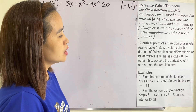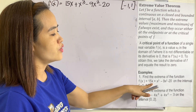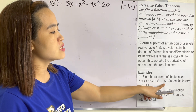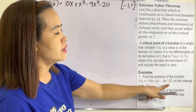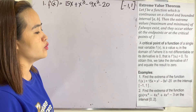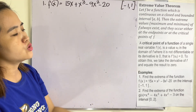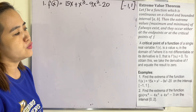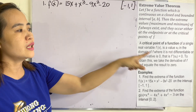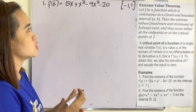Example 1: Find the extrema of the function F(x) = 15x + x³ − 9x² − 20 on the interval [−1, 1]. We need to find the derivative of this function and then equate it to 0.